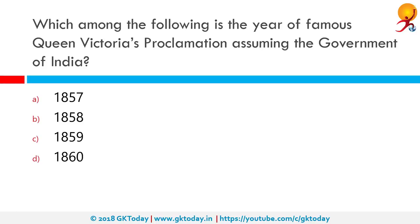Which among the following is the year of Queen Victoria's famous Proclamation assuming the Government of India? On November 1st 1858, Lord Canning sent forth the Royal Proclamation at the Grand Darbar at Allahabad, where Queen Victoria intimated that she had assumed the direct government of India. This proclamation set forth the principles on which India was to be governed in future. The correct answer is 1858.